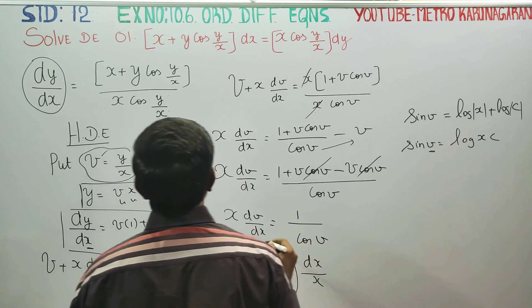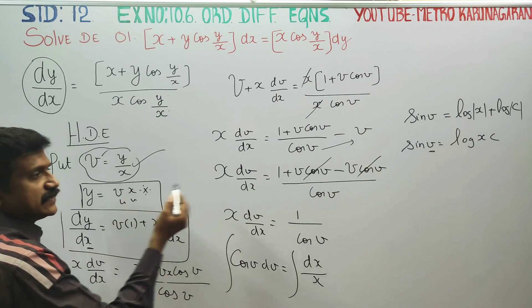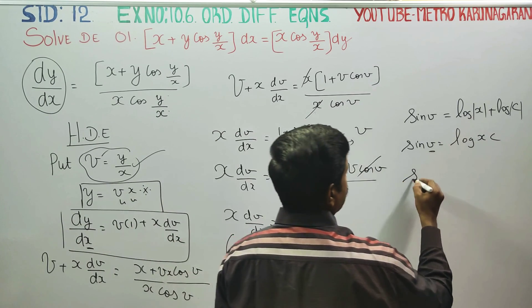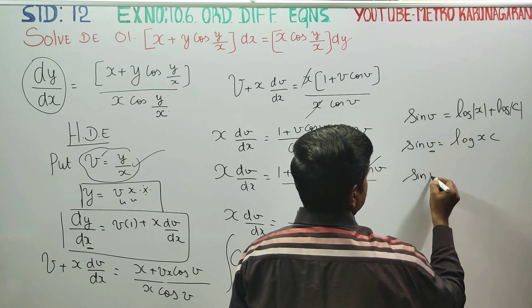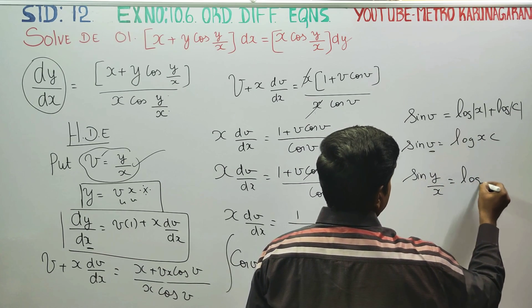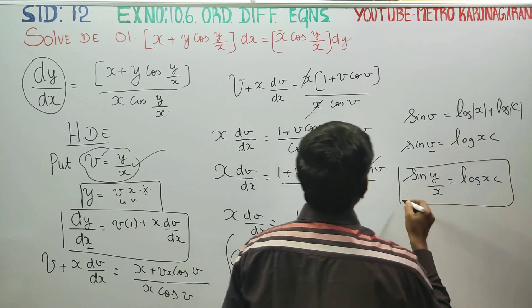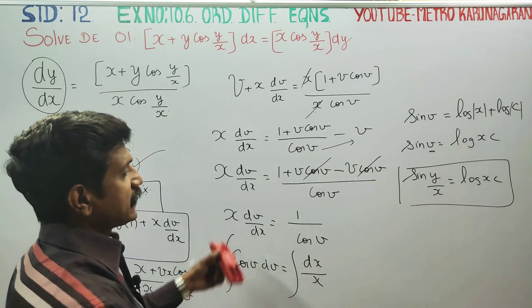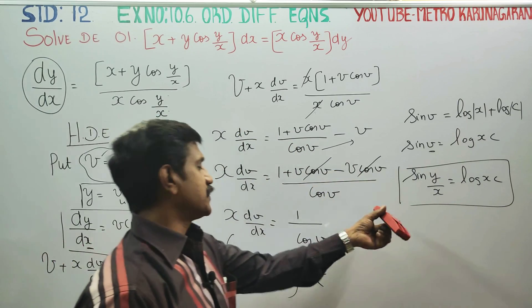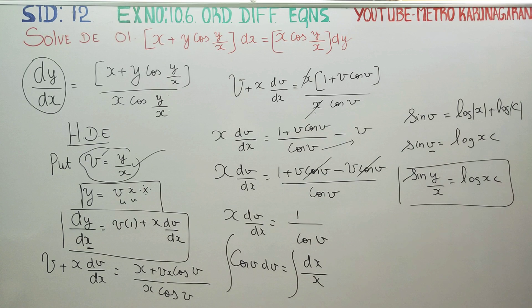Now substitute back v equal to y by x. So sin(y/x) is equal to log(xc). This is your final solution: sin(y/x) = log(xc). Thank you.